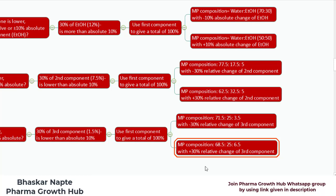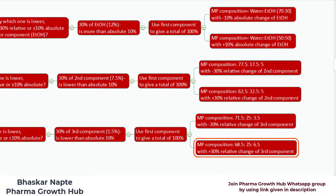The second possible mobile phase composition with plus 30% relative change of the third component is 68.5 : 25 : 6.5. I have added 1.5, so 5 plus 1.5 becomes 6.5. I haven't changed the composition of the second component. As the quantity of the third component increased by 1.5, to balance it out I need to decrease the quantity of the first component by 1.5. The original quantity of the first component is 70, so 70 minus 1.5 becomes 68.5. This is how we understand the allowable variation for a ternary mixture.